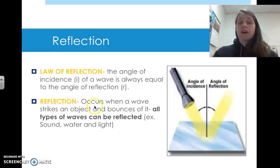Reflection occurs when a wave strikes an object and bounces off of it. So it doesn't get absorbed by it. It bounces off of it. And all types of waves can be reflected, not just light. So sound waves, water waves. Anytime there is a wave and it hits a solid surface that cannot absorb it or refract it, it gets reflected.